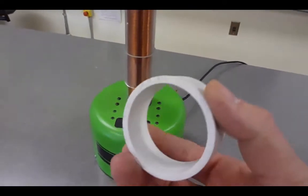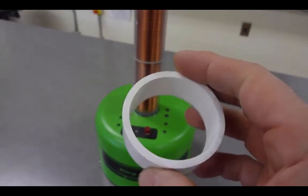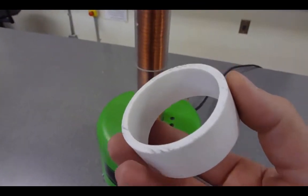When demoing this with students, we start off with this first one, which is a piece of plastic. We talk about whether or not plastic is a conductor of electricity.